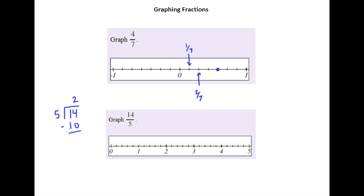So five goes into 14 twice. Two times five is ten. So we have a remainder of four. So that means that 14 fifths is equal to two and four fifths.